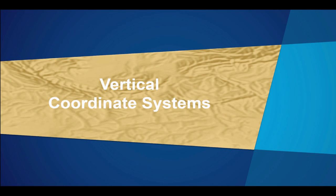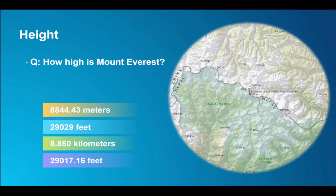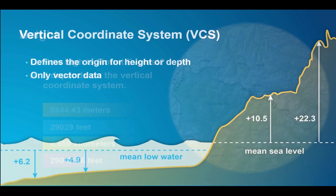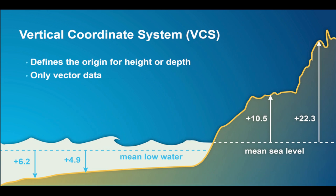Moving on to vertical coordinate systems. How high is Mount Everest — is it 8,800 meters or 29,000 feet? Again, it depends on the coordinate system. Right now in our software, we only support vertical coordinate systems for vector data. A vertical coordinate system defines the origin from which you are measuring height — sometimes above a given line, sometimes below, depending on whether you're dealing with heights or depths.